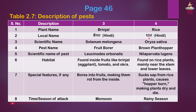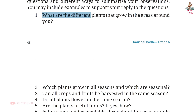Fourth pest: Rice. Local name: Dhan in Hindi. Scientific name: Oryza sativa. Pest name: Brown plant hopper. Scientific name of pest: Nilaparvata lugens. Habitat: Found on rice plants mainly near the stem and lower leaves. Special features: Sucks sap from rice plants, causing hopper burn, making plants dry and die. Season of attack: Rainy season.